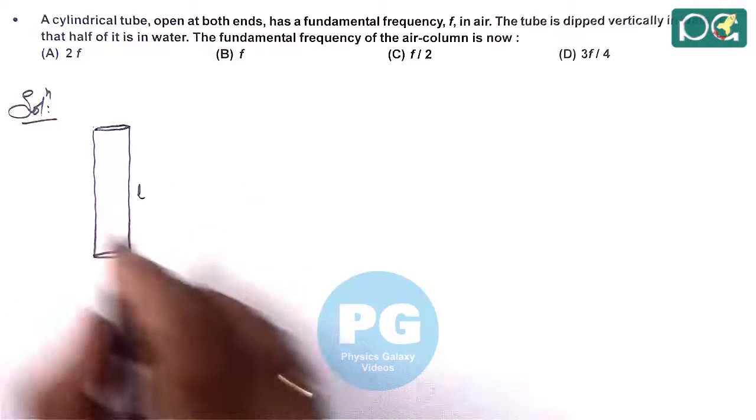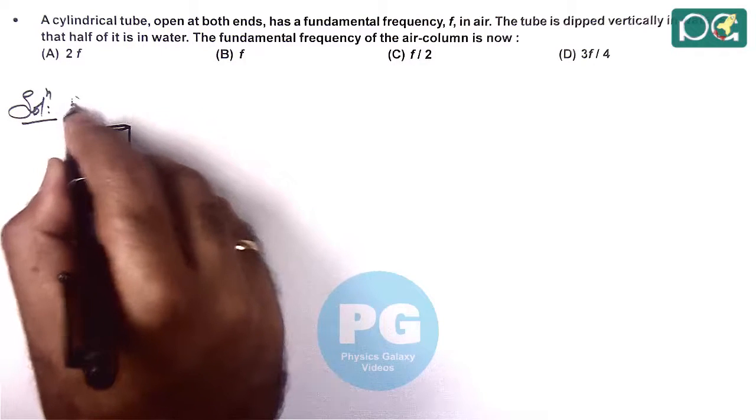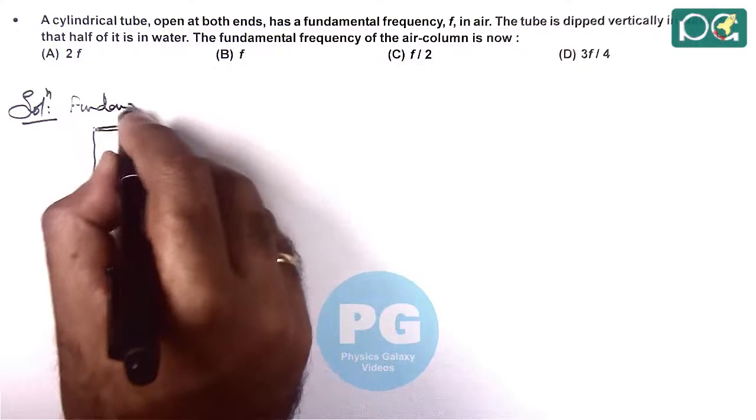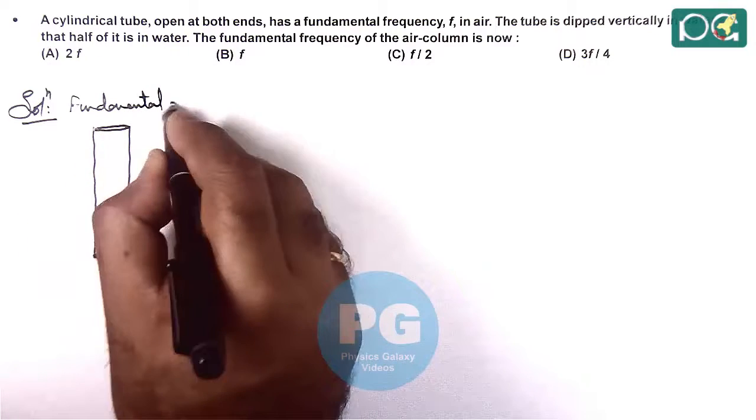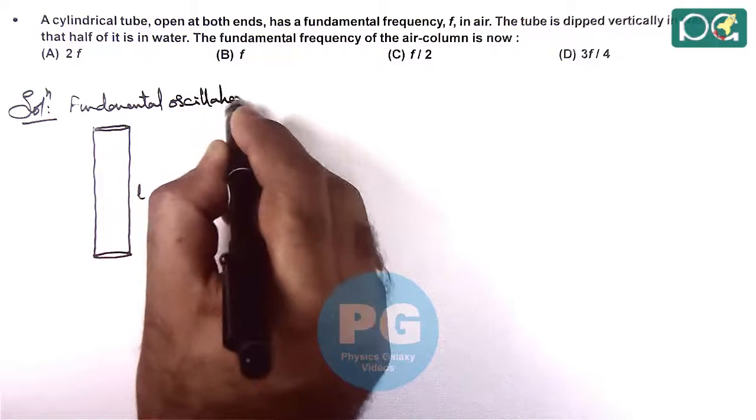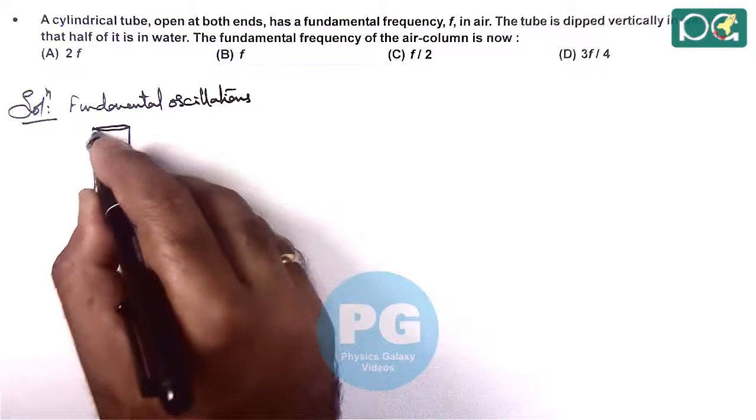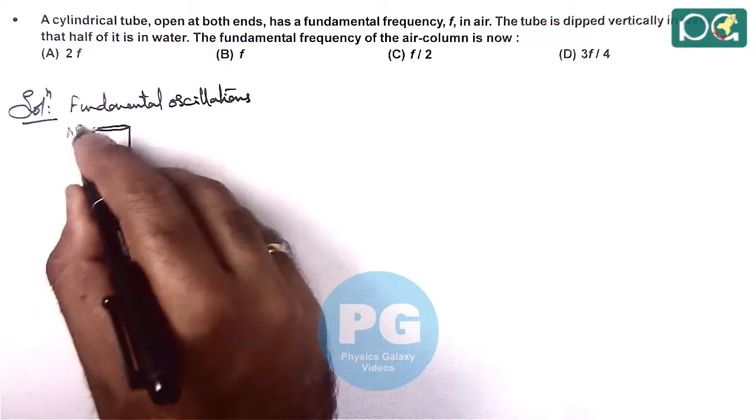So when we talk about fundamental frequency, fundamental oscillations, then at both the ends anti-nodes are obtained.